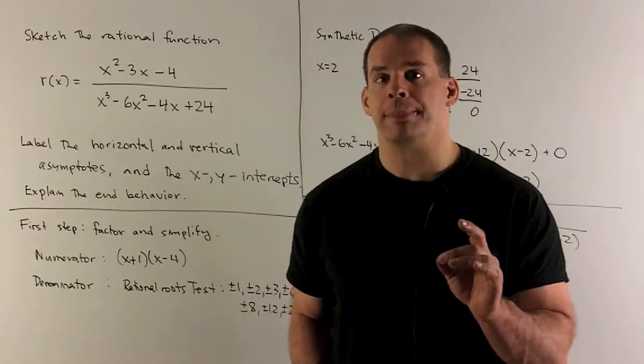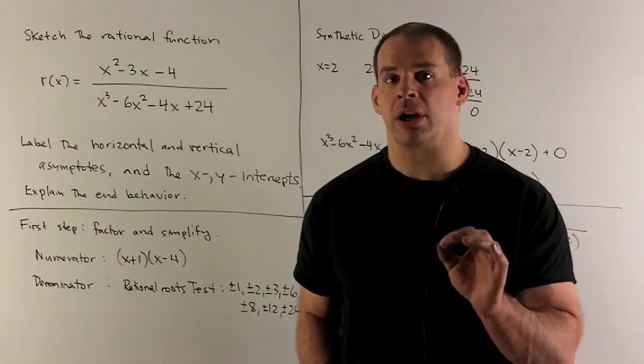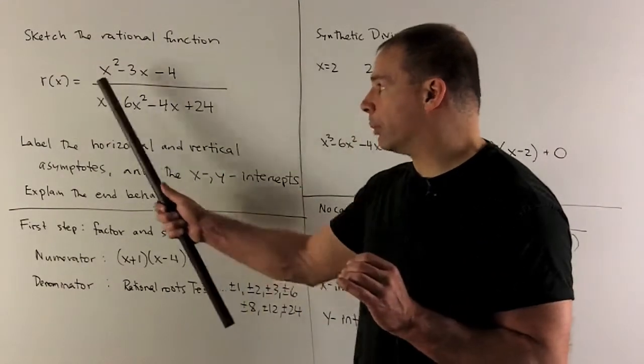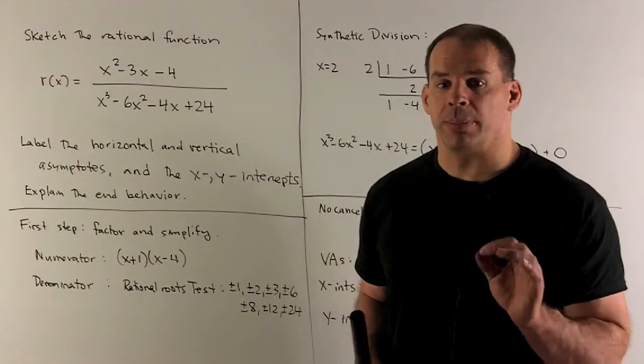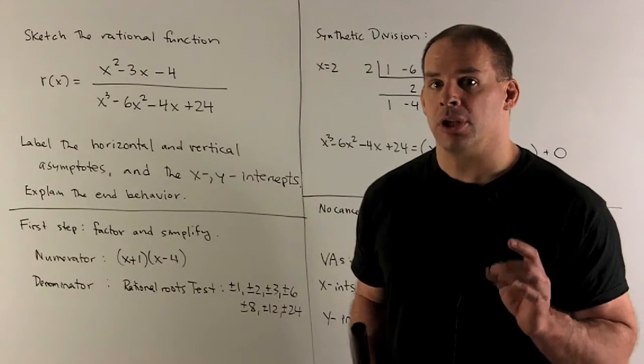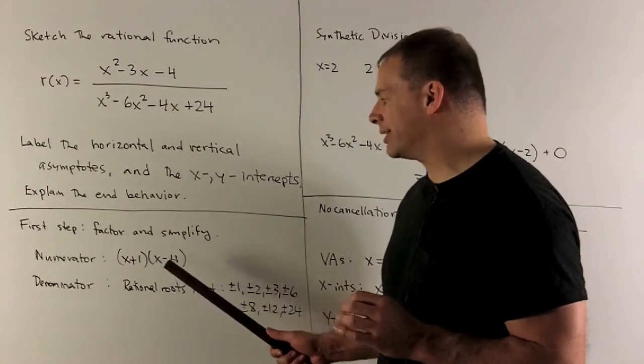Our first step, I want to factor the numerator and the denominator. For our numerator, we have a quadratic. So we can apply the quadratic equation, or we can just factor by inspection. So that turns into (x + 1)(x - 4).